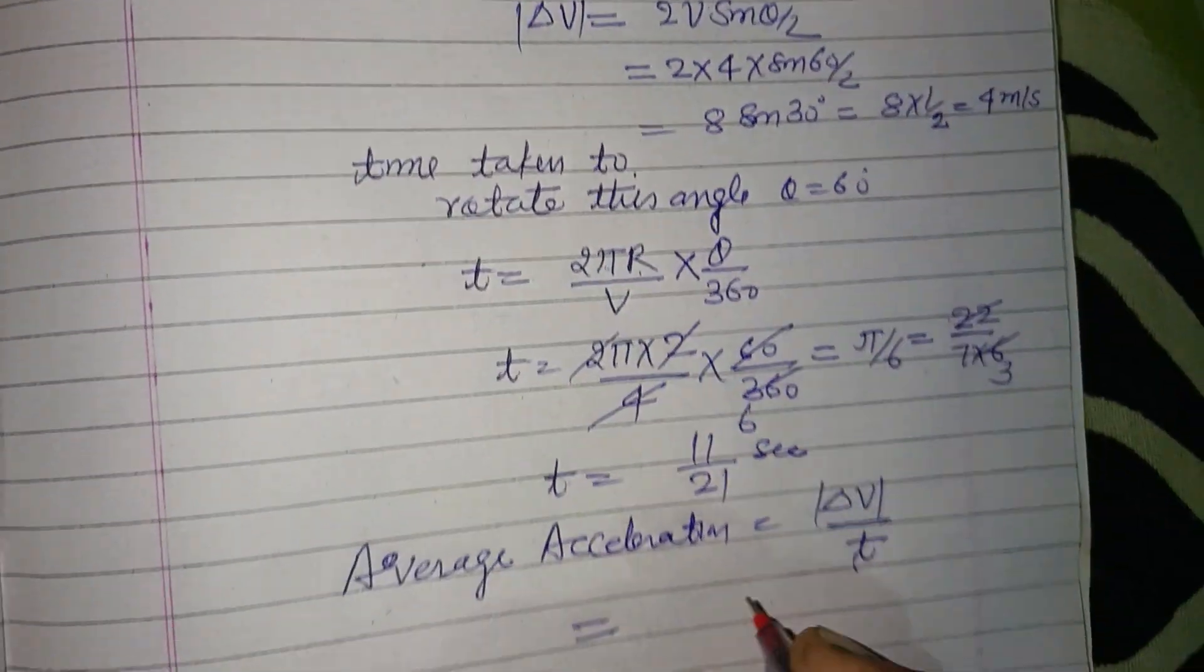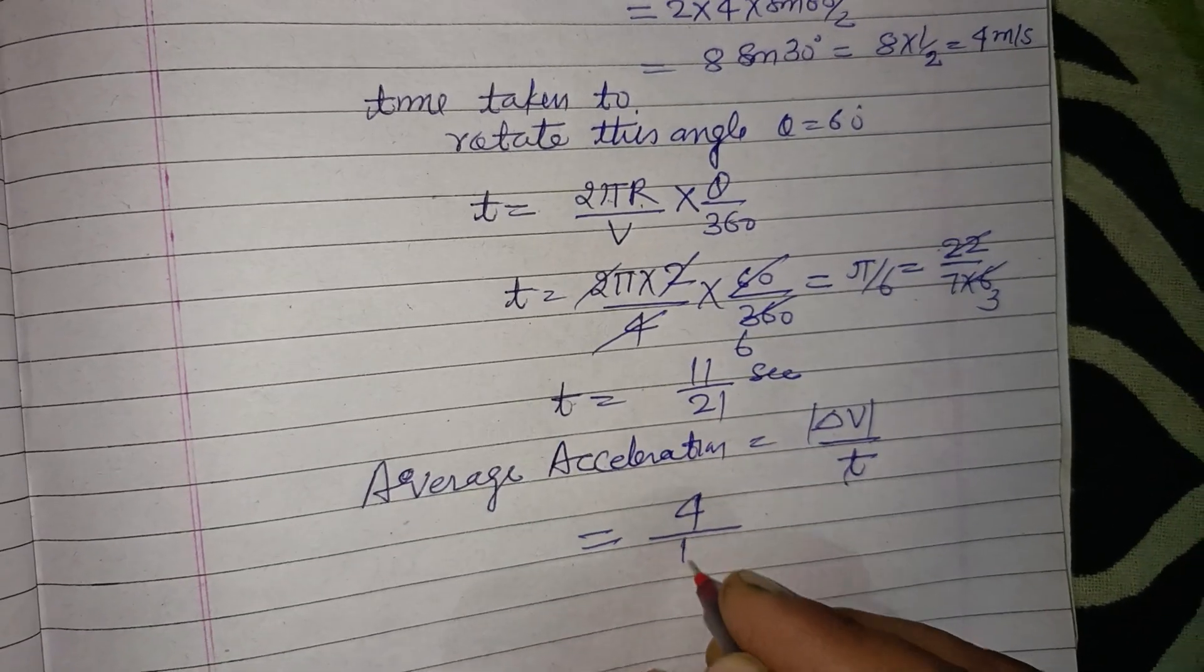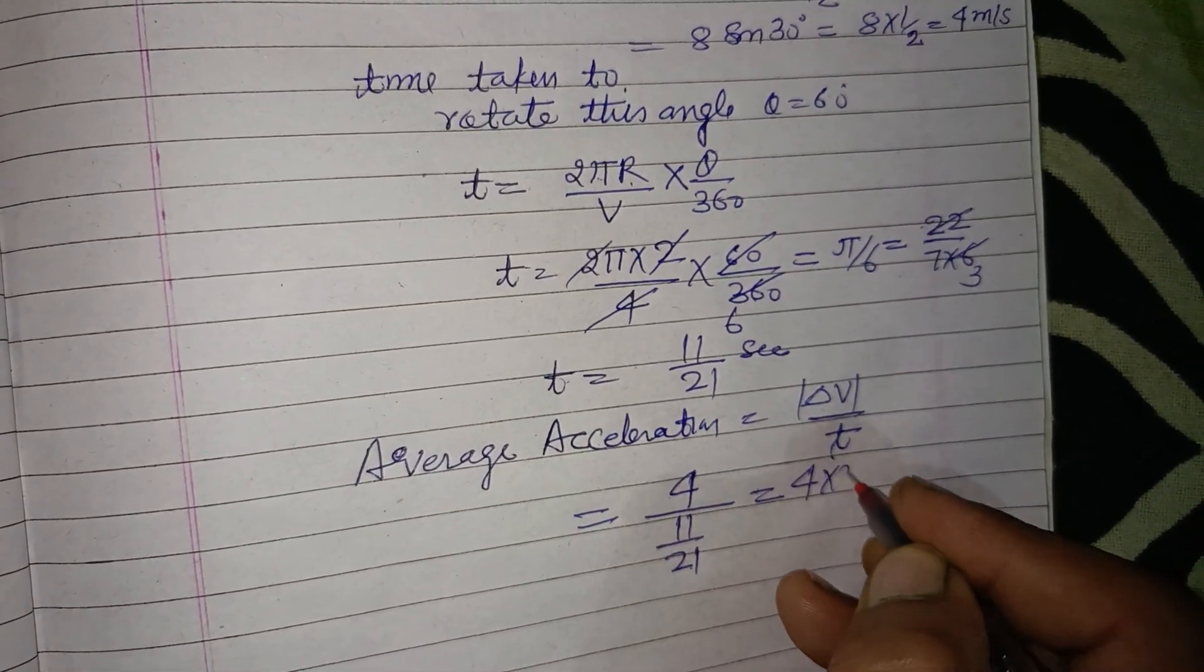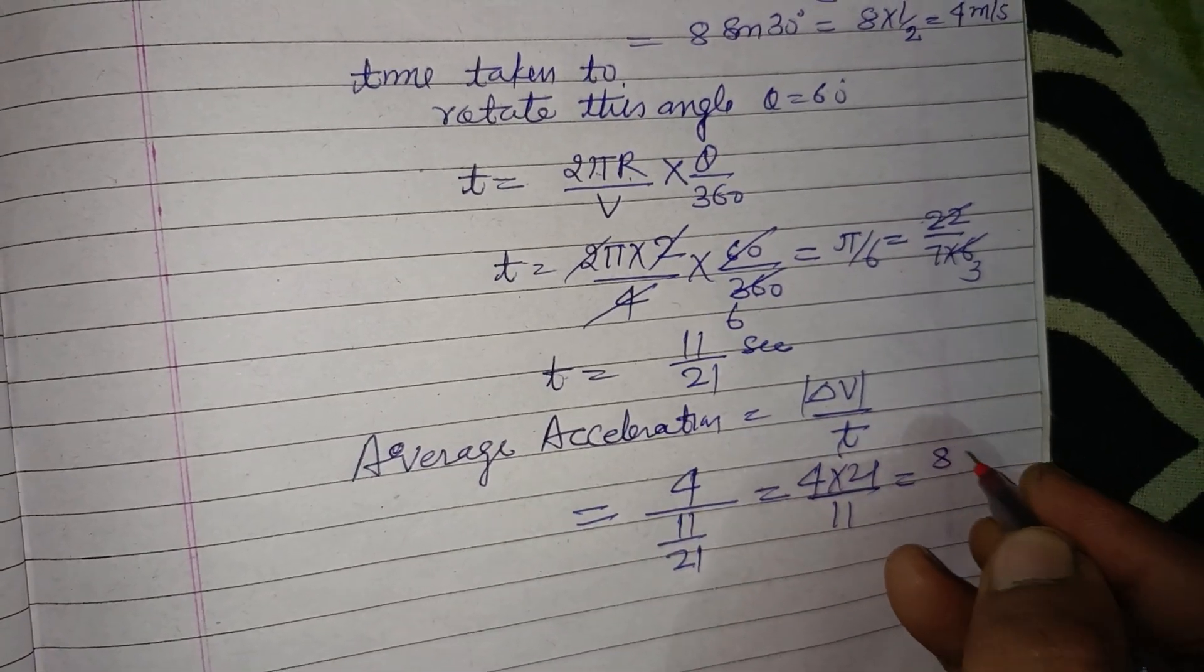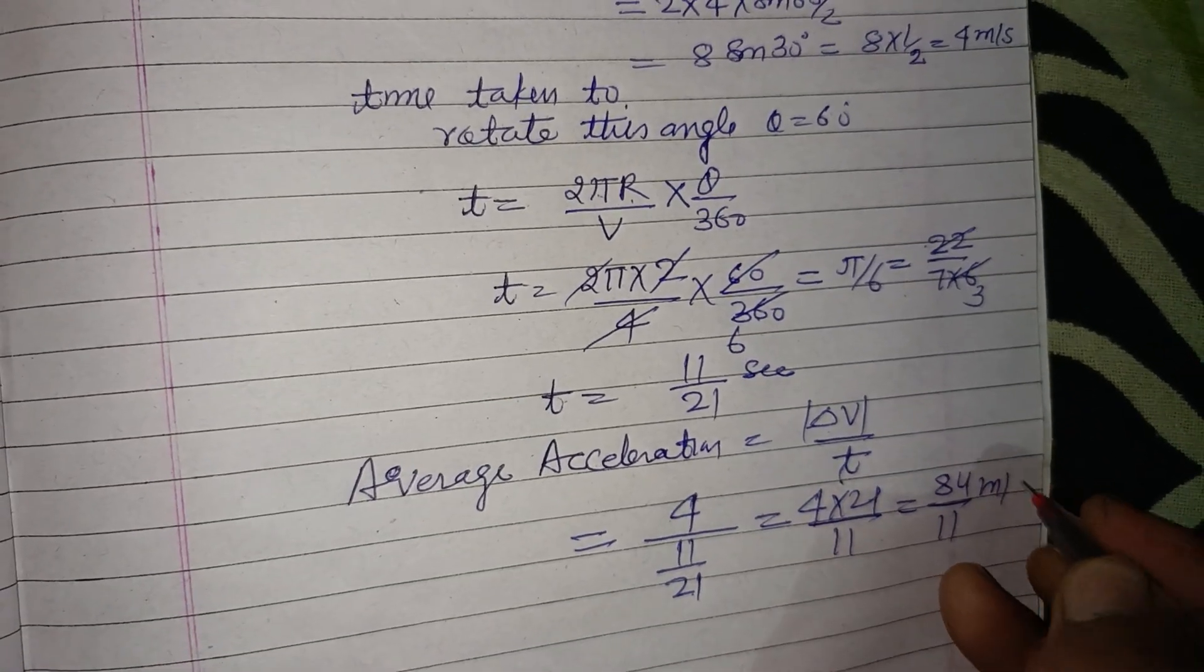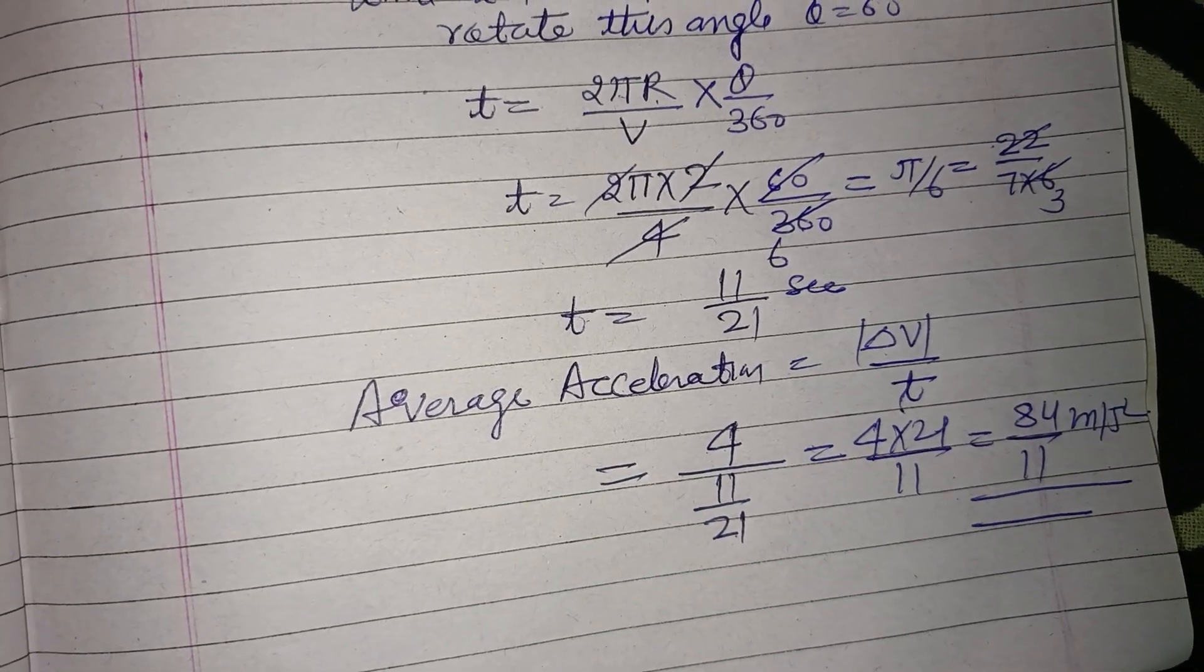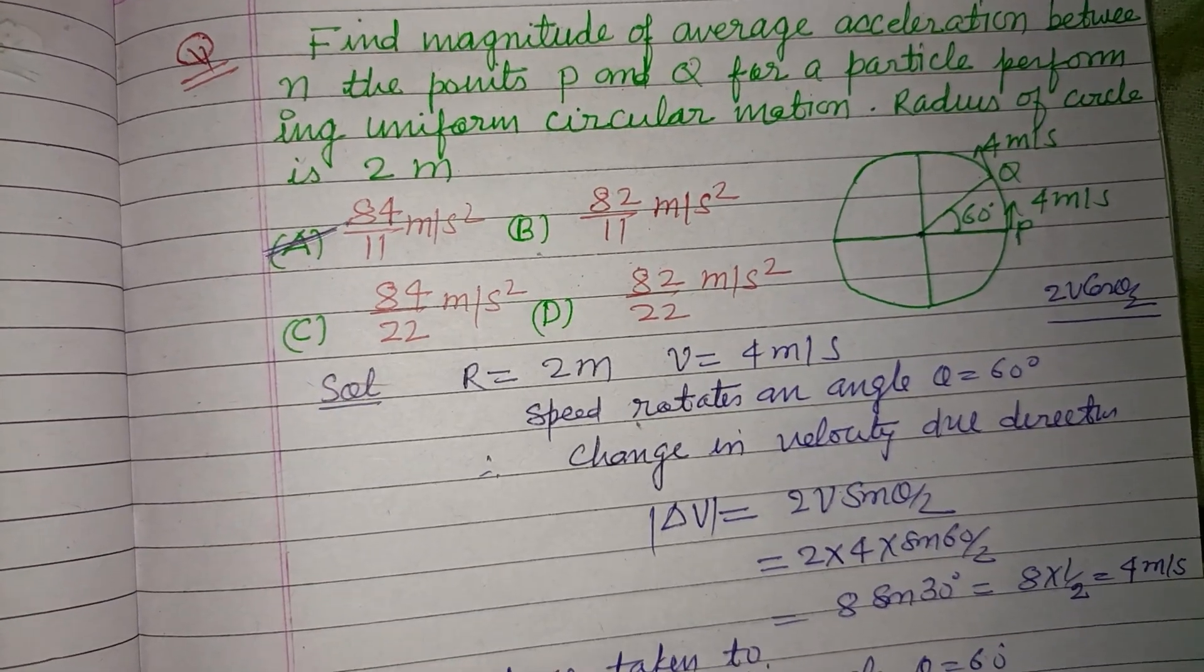Change in velocity is 4 upon time is 11 upon 21. So this is 4 into 21 upon 11, that is 84 upon 11 meter per second square. So finally we got the value 84 upon 11 which is given in option A. So option A is correct.